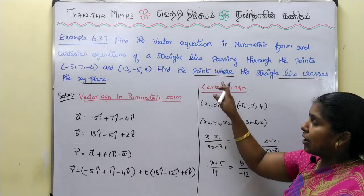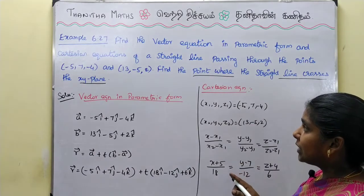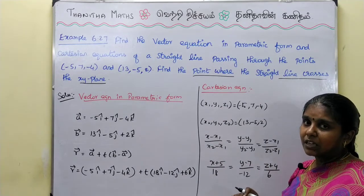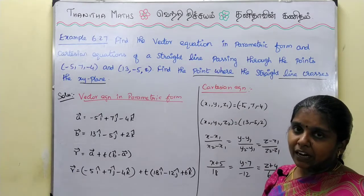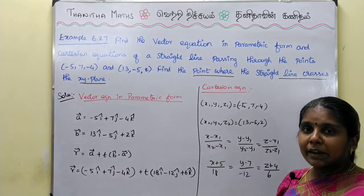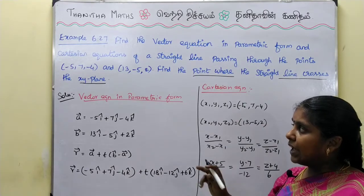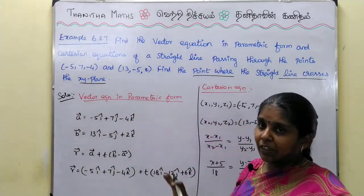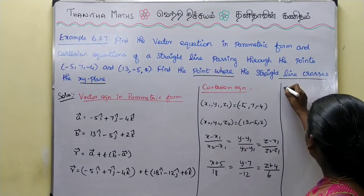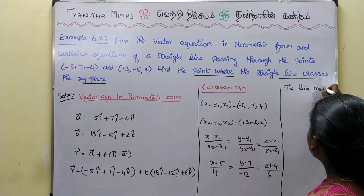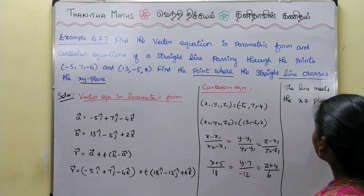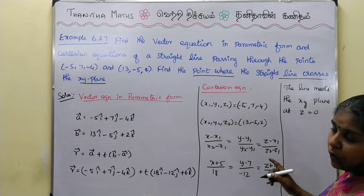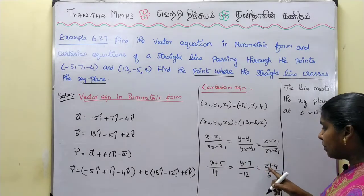Now, what about the point where the line crosses the xy plane? The line crosses the xy plane, and at that point the z value is 0. So we substitute z equal to 0 into the equation.